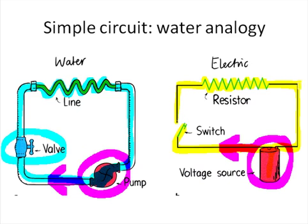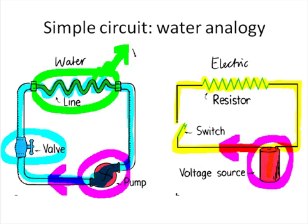Some of the pipes in a water circuit might be narrow, offering a lot of resistance. Such a pipe makes it difficult for the water to flow through it. The water loses water pressure as it flows through this thin pipe.